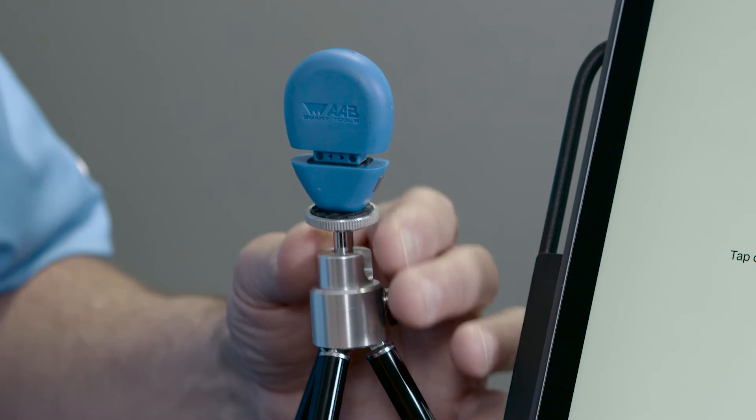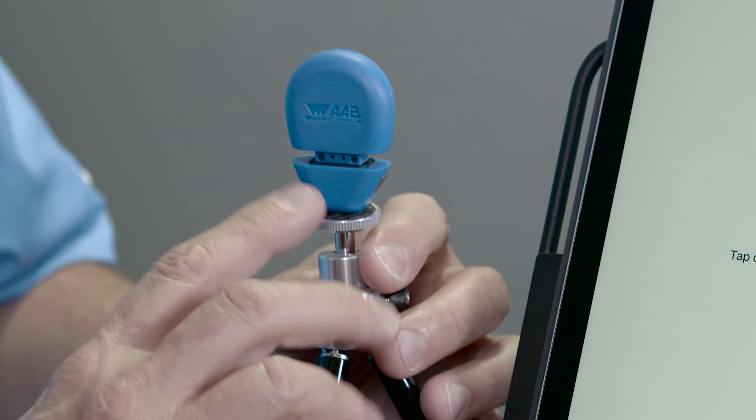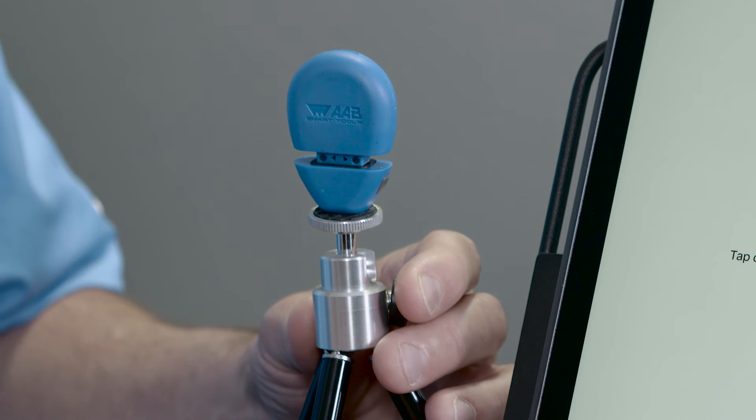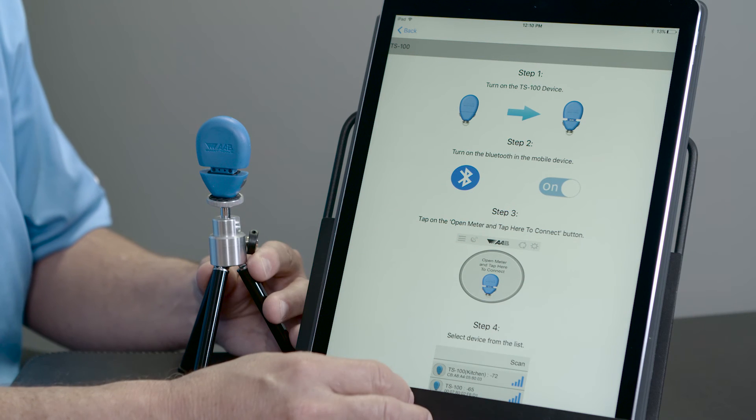Now we have a blue light blinking to tell us that it needs to connect to our Bluetooth smart device. It also exposes our sensor to the airstream. We need to make sure that our device has Bluetooth enabled on it.